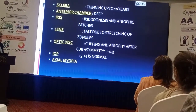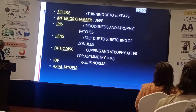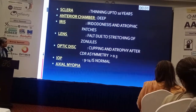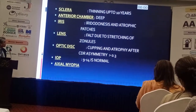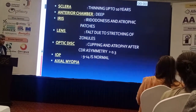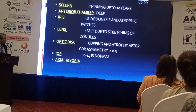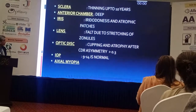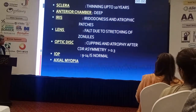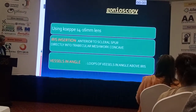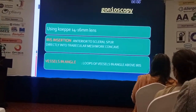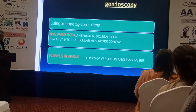As I said, this is a disease of the whole eye. The sclera is thinned out — this is up to 10 years of age because the sclera and cornea in kids are very flexible and elastic structures. The iris shows patches, the lens becomes flat due to stretching of the zonules, and sometimes the zonules are ruptured and the lens may be dislocated. Optic nerve cupping and atrophy occur, and IOP is 9 to 14. There is axial myopia as the size of the eyeball increases.